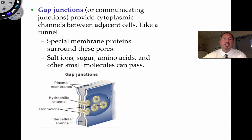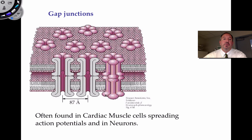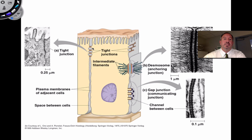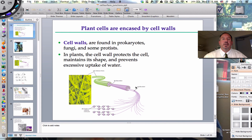Similar to plasmodesmata in plant cells, animal cells have literal tunnels called gap junctions between them, allowing cytoplasmic solutes to move between adjacent cells. Special proteins create pores between cells so that ions, sugars, amino acids, and small molecules can pass through and communicate. An example is cardiac muscle, where gap junctions help spread action potentials, and in neurons that communicate ions across gap junctions between cells.